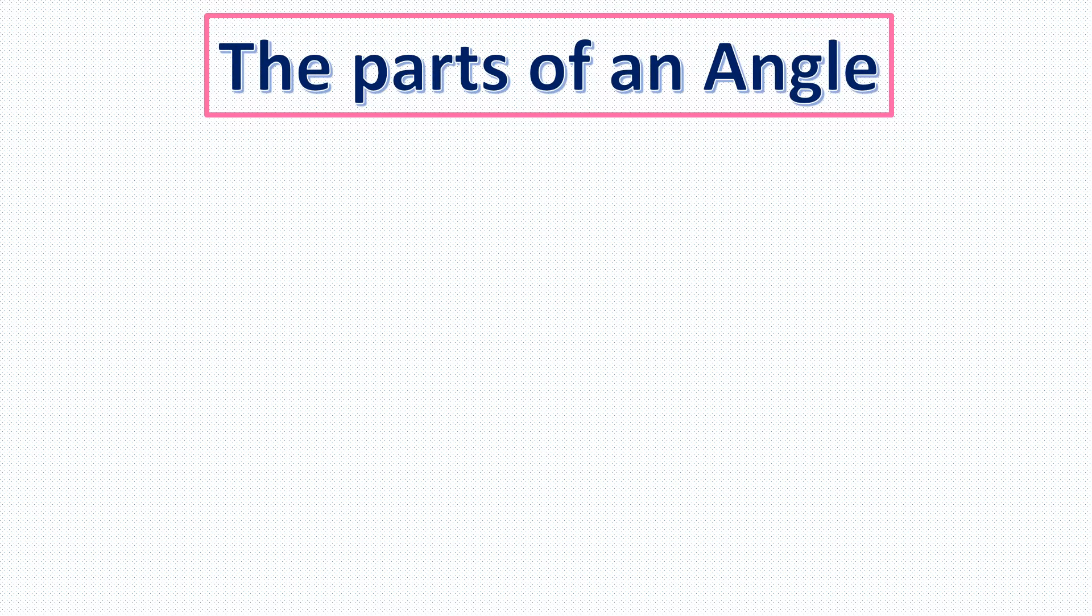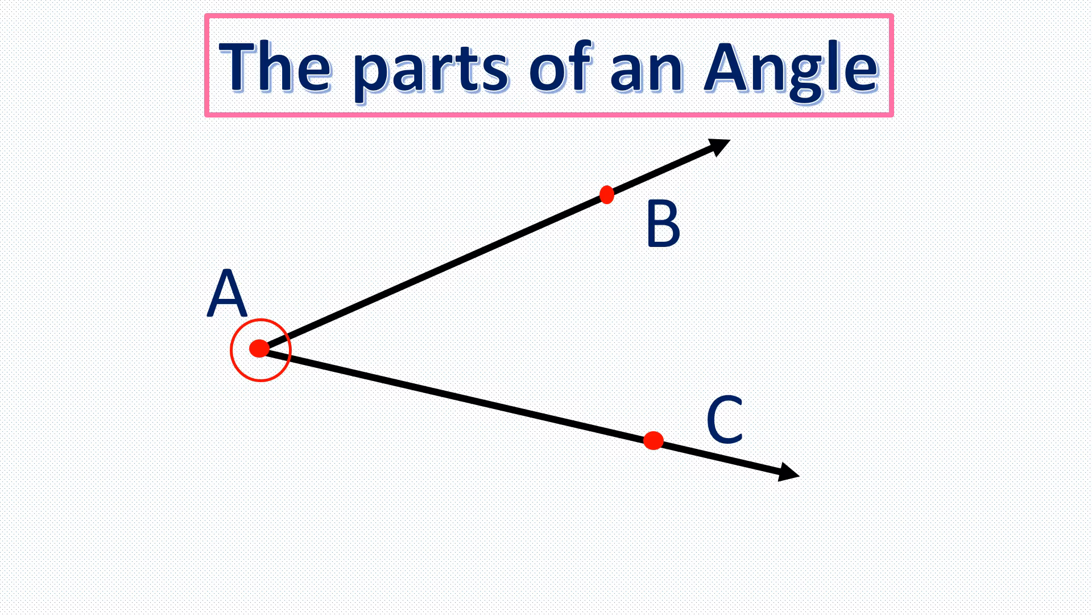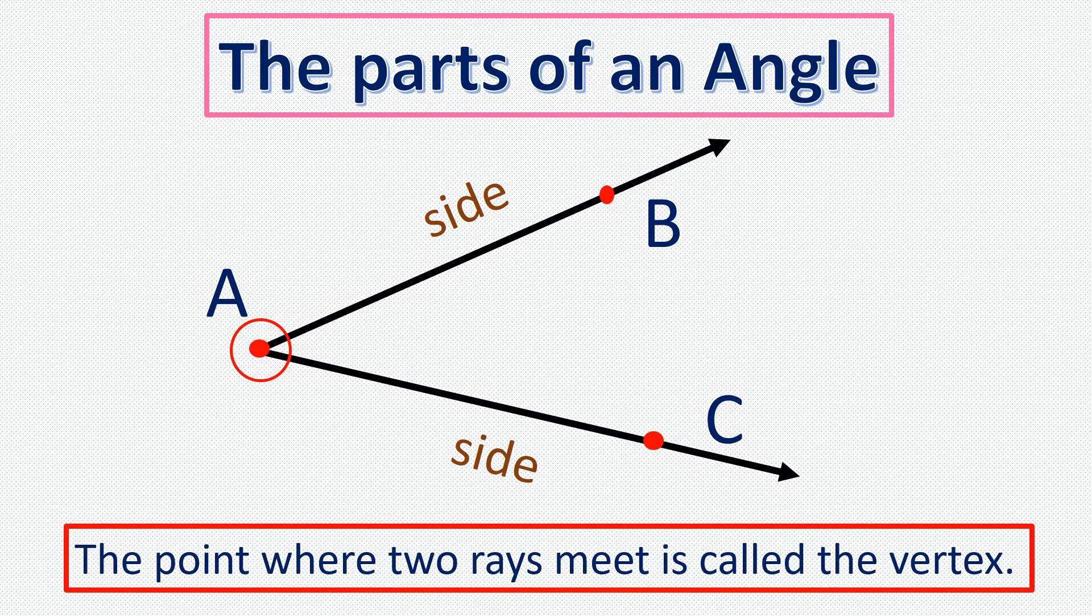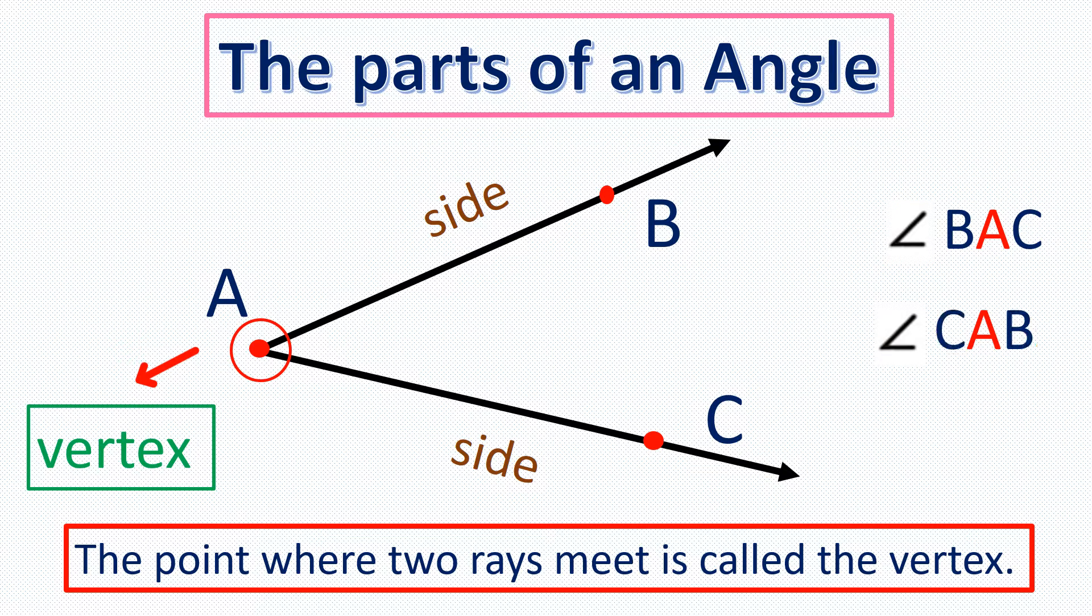What are the parts of an angle? Earlier, we learned that two rays with the same endpoint make an angle. For example, if we have ray AB and ray AC, these two rays meet at point A. These two rays are the sides of the angle. And the point where the two rays meet is what we call the vertex. We can name this angle as angle BAC or angle CAB. The letter in the middle is always the vertex. A vertex is a special point and for that reason, an angle can also be named by its vertex. Therefore, in this example, the angle can also be named as angle A.